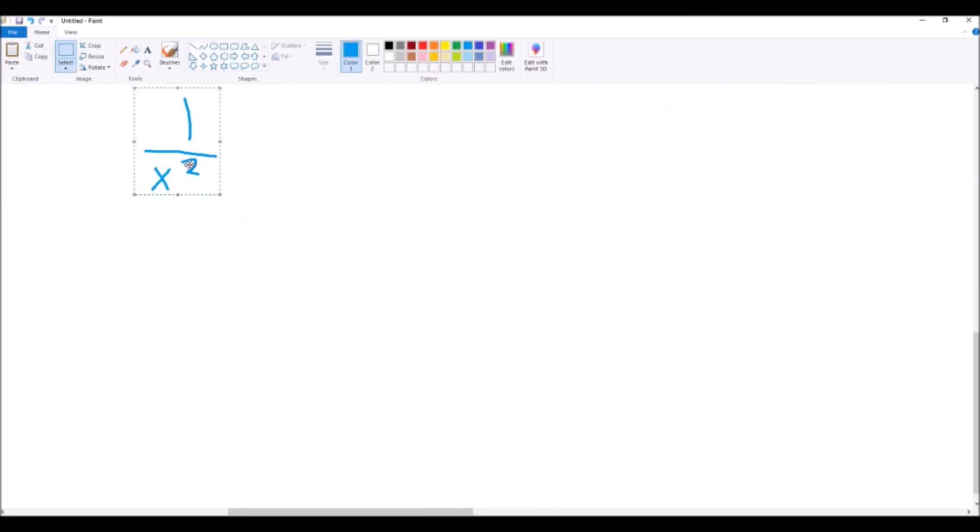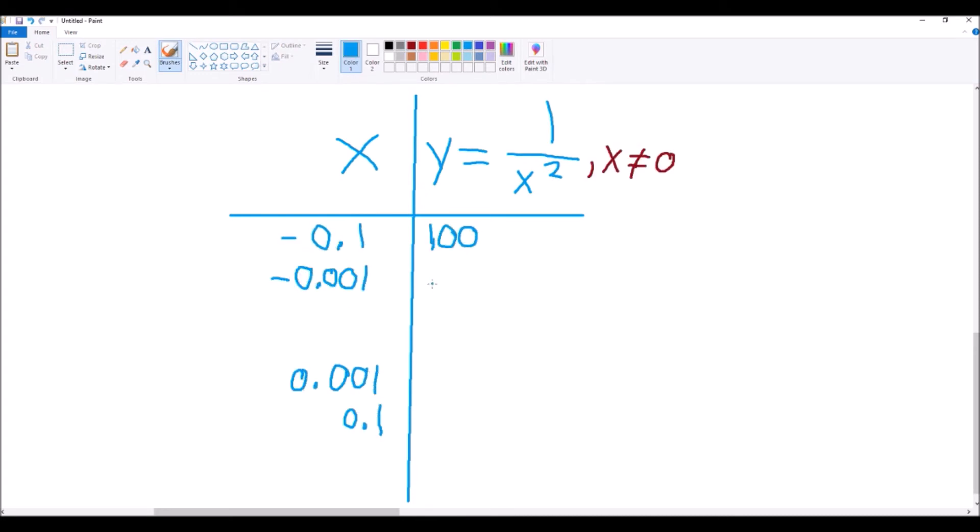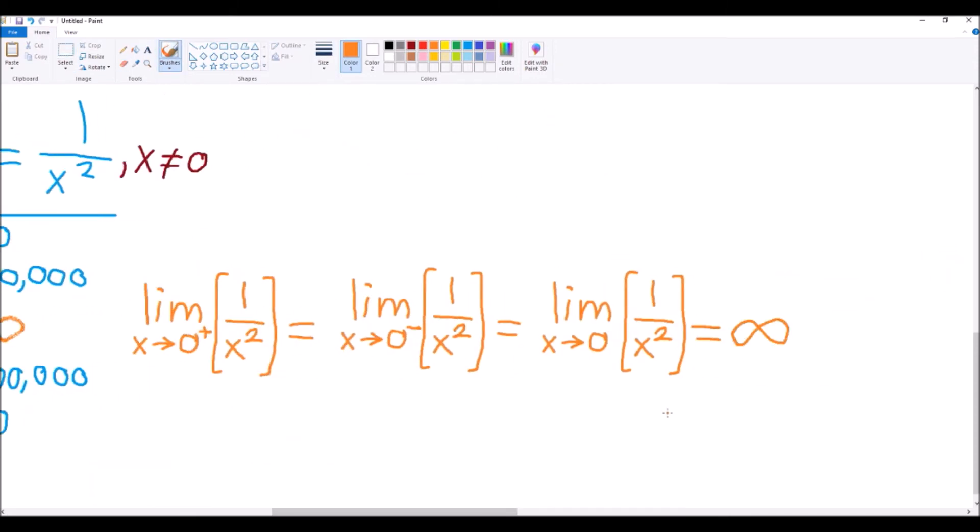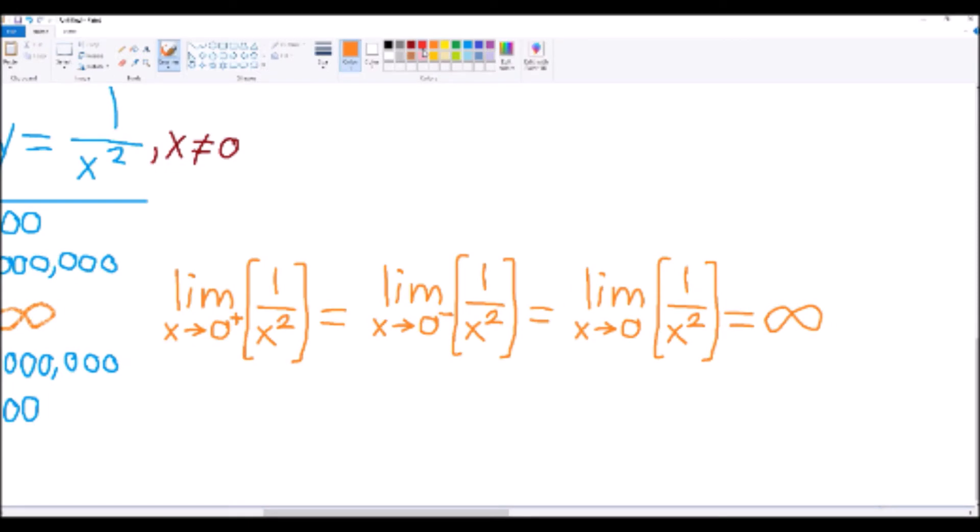For the 1 over x squared case, 0 is the forbidden value. So we see if the limit from above and below are equal, and we can see that since the pattern can be assumed to continue, we can say that the limit as x approaches 0 of 1 over x squared equals infinity, because the limit as x approaches 0 from the positive and negative directions are equal to each other, so this limit does exist. How nice!